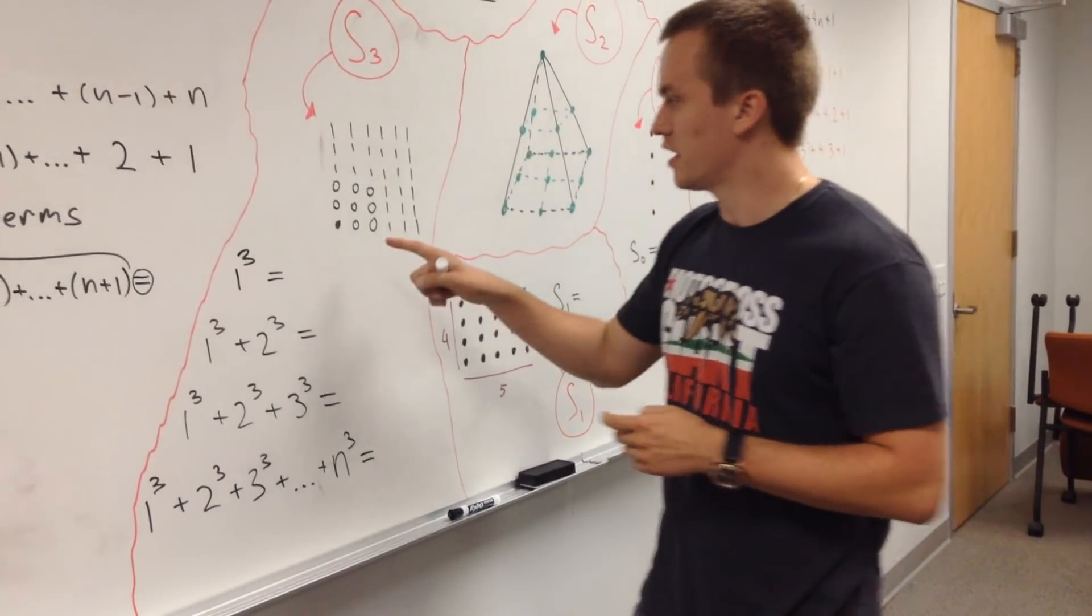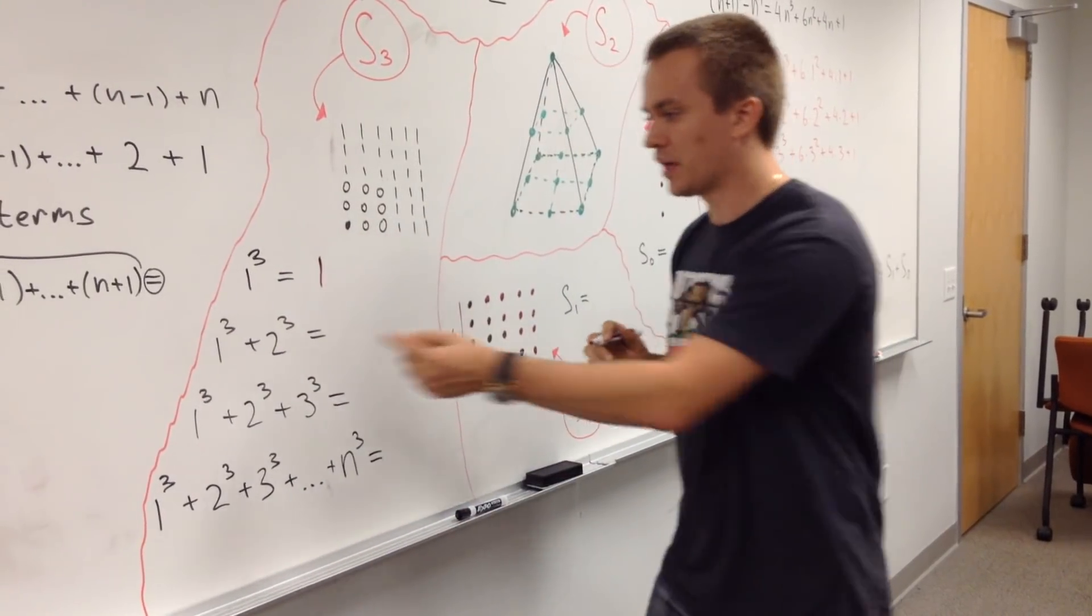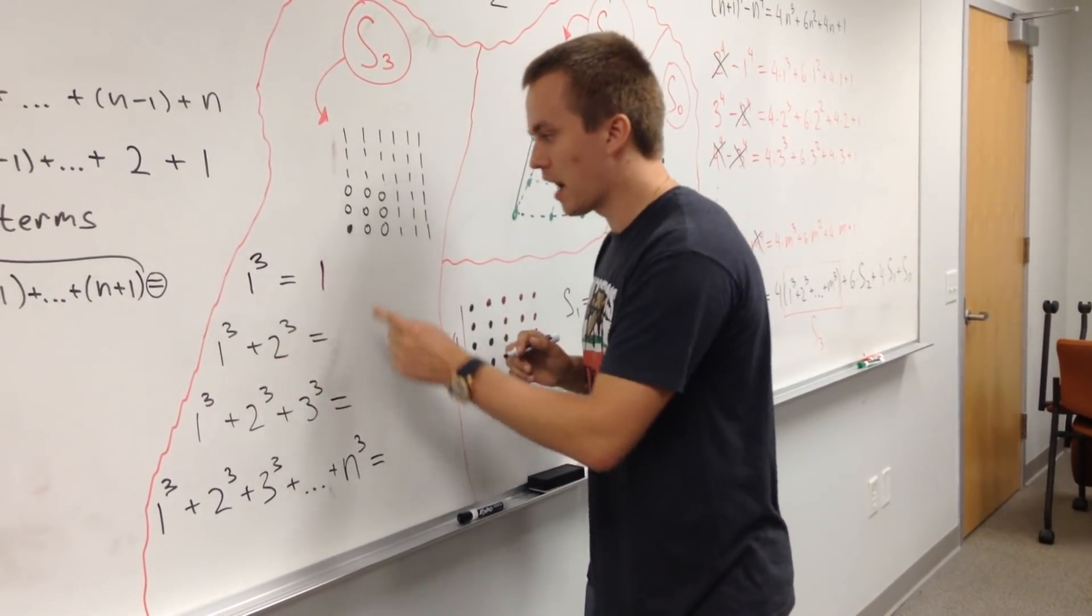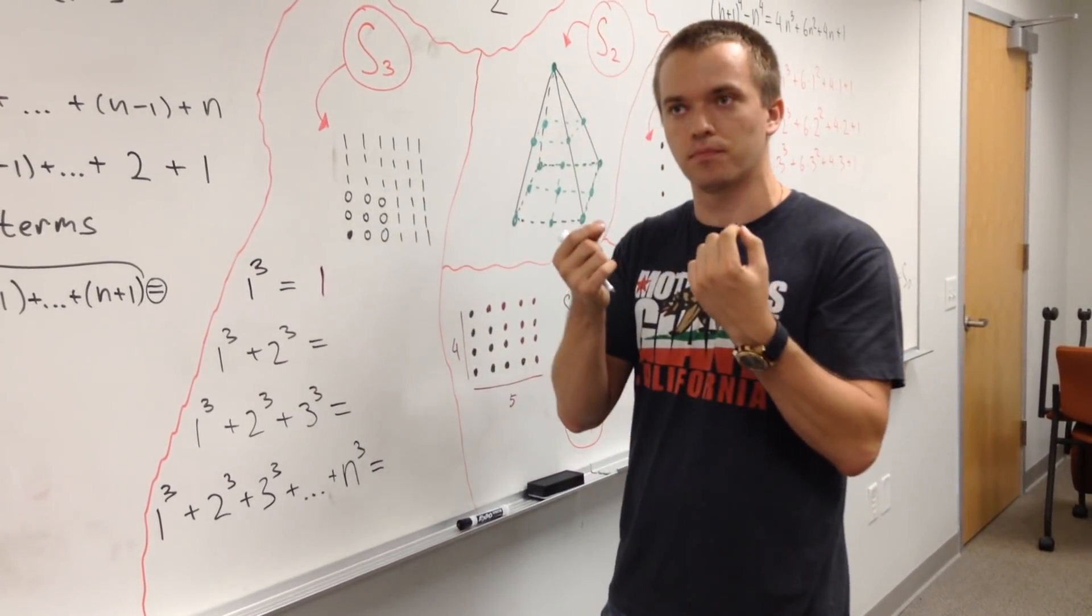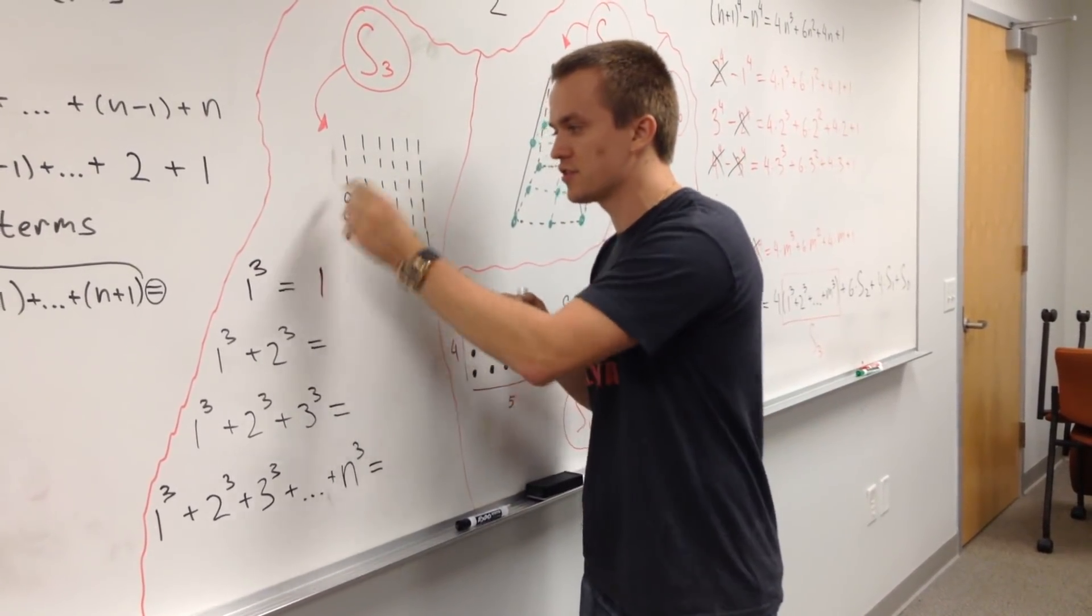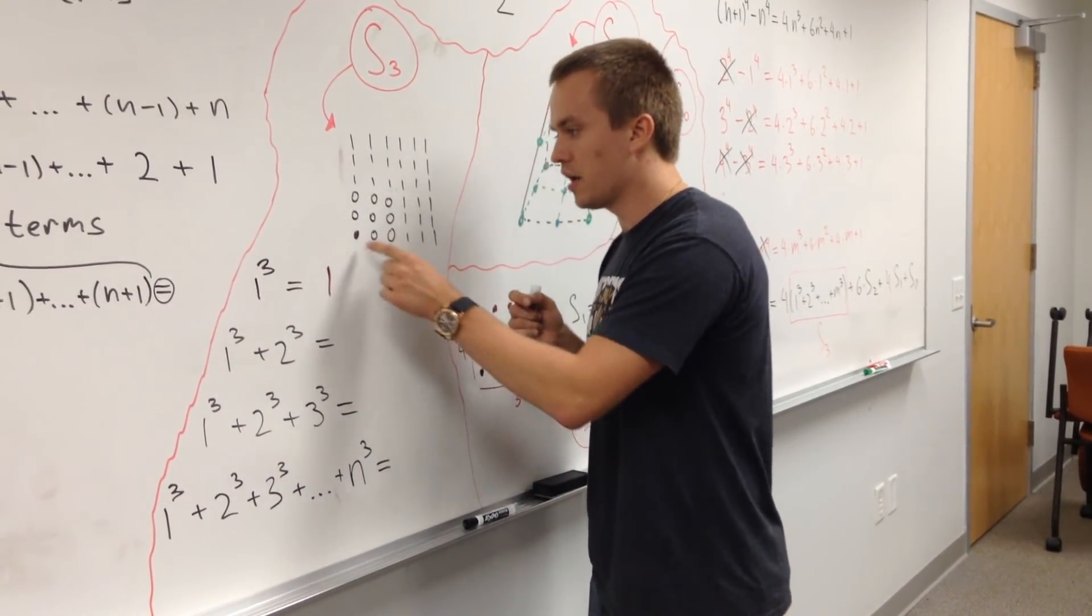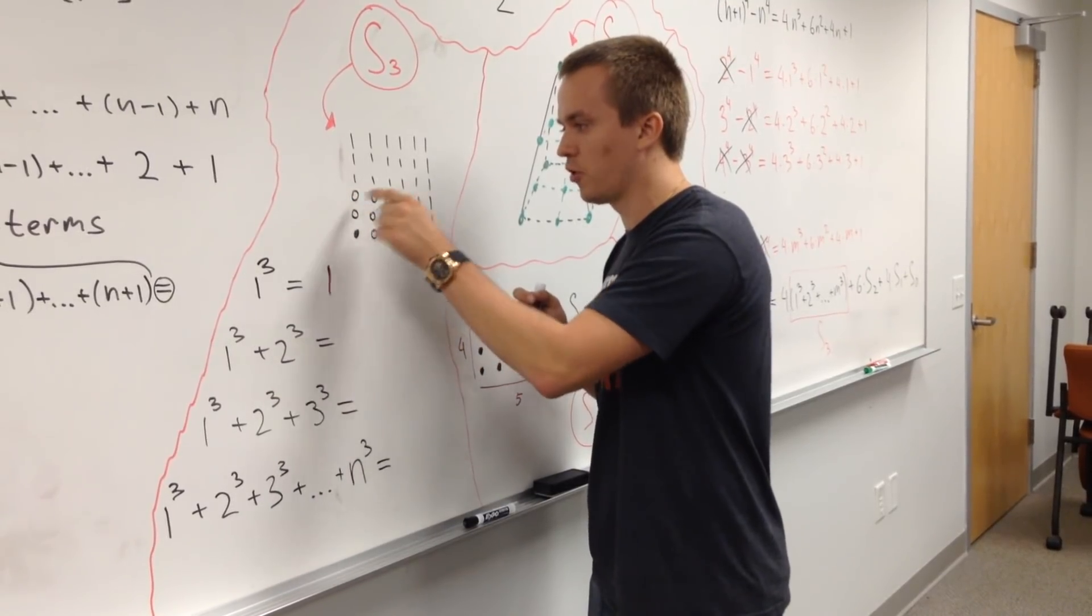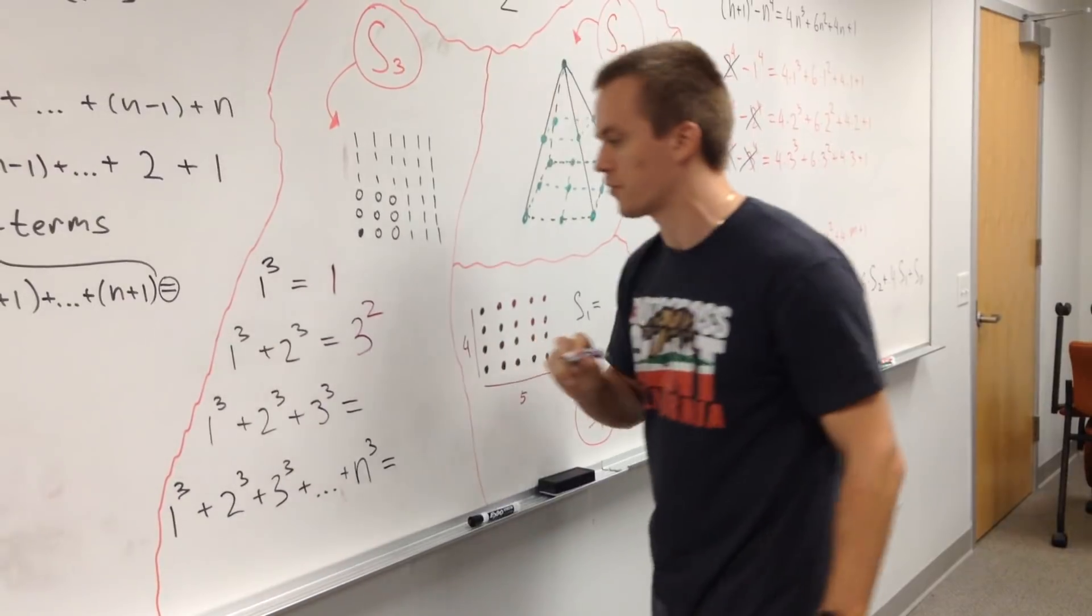So in this case, I want to find that when I just have one cube. One cube is equal to one. When I have one cube plus two cube, I have one, and two cube is eight. So I'll take my eight dots and organize in this fashion way. And I can see, even if I will take one cube plus two cube, it's gonna be like this small square, three by three. So I'll get that this sum is equal to three square.